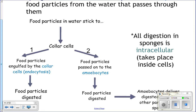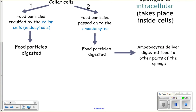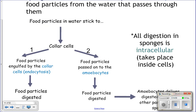Or after engulfing the food, the collar cell can hand it off to an amoebocyte, which will digest it and deliver the nutrients to another cell in the sponge's body. Basically, all of the digestion that happens inside a sponge is intracellular — meaning inside of a cell. And notice: no mouth and no digestive tract. It all happens inside of cells.